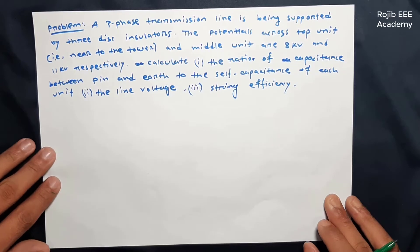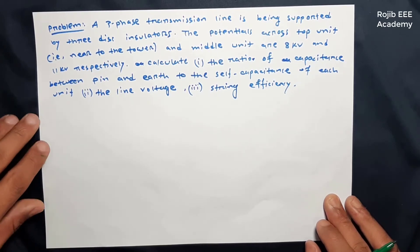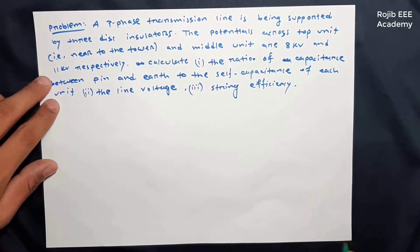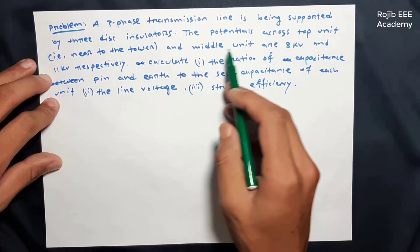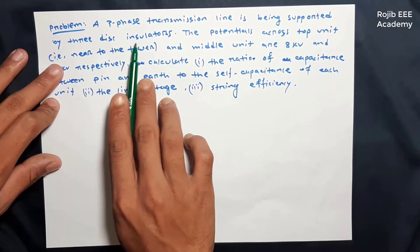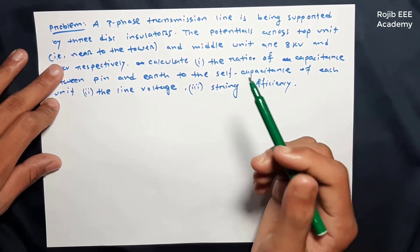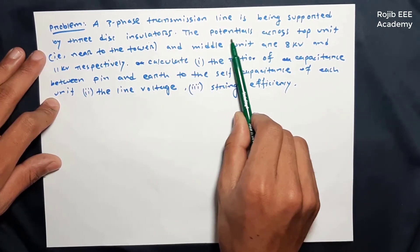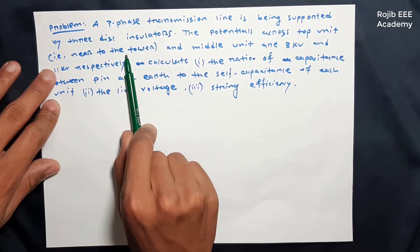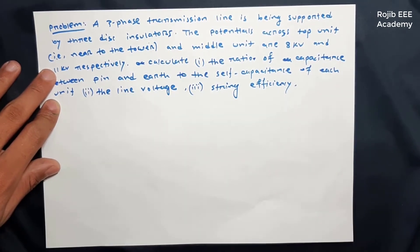Hi, my name is PowerSystem analysis course reviewer. This 3-phase transmission line is being supported by a 3-disc insulator. The potentials across the top unit, that means near to the tower, and middle unit are given.